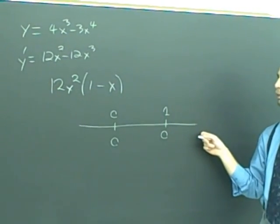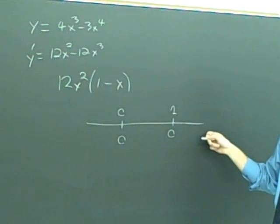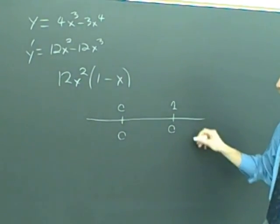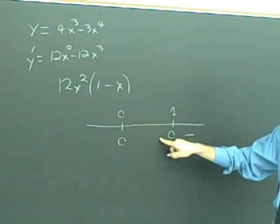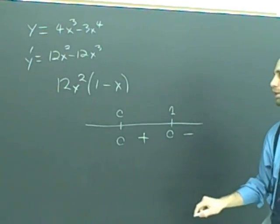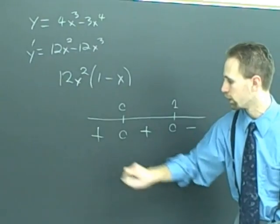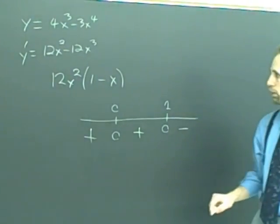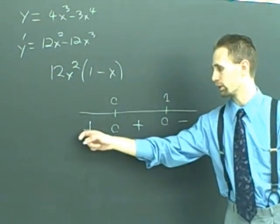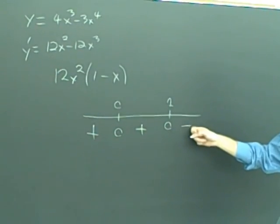You pick a large number, plug it in. You make x large, you'll wind up with a negative value. Will we get a sign change across 1? Yes, because it only appears once in the factorization. We get positive. And will we get a sign change across 0? No, because it appears twice in the factorization. We get positive again. So this function, the original must be increasing, then it flattens out, it's increasing again, and then it starts to decrease.